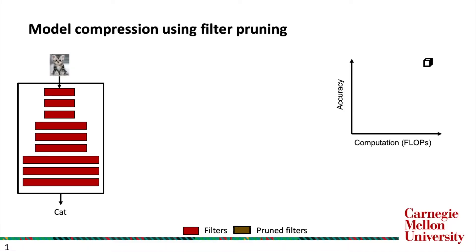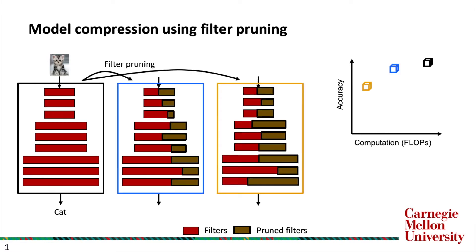We consider model compression using filter pruning. On the left-hand side, we have a nine-layer pre-trained conv net with gray boxes representing convolutional filters. Filter pruning is a method that prunes away filters to arrive at smaller models that have less floating-point operations, or FLOPs, without losing too much accuracy.